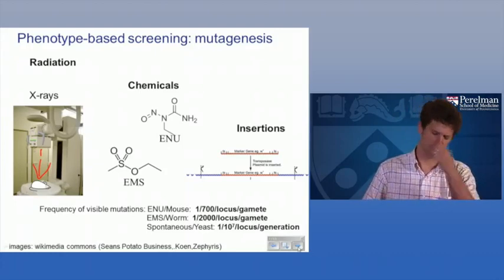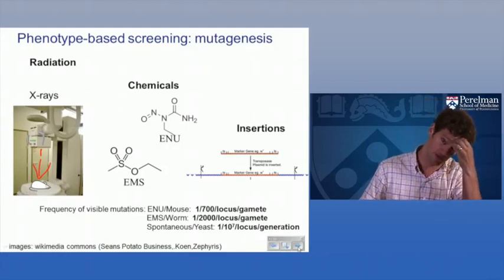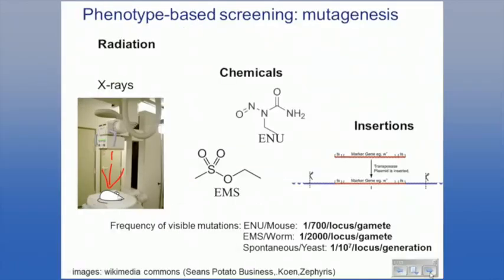The last method is insertional or transposon mutagenesis, most famously in fly using the P element, where transposons jump into the genome and disrupt a gene. This has the huge advantage that you have a little molecular marker you can use to identify exactly what the gene is — if you have a phenotype, you can do inverse PCR, figure out the insertion site of your transposon, and there you have your gene.